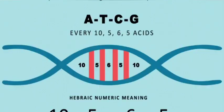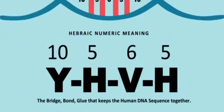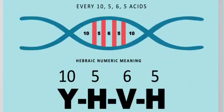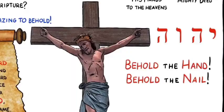And that is also comparable in the same number pattern as Yahweh, 10-5-6-5, the name of God. And what is the name of God and what does it mean? Well, when you take the translation of these words, it means 'Behold the hand, behold the nail.'